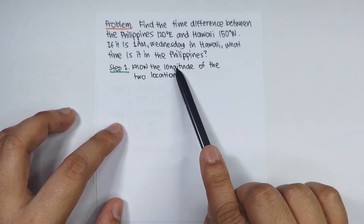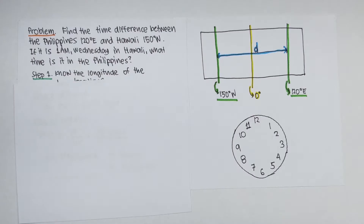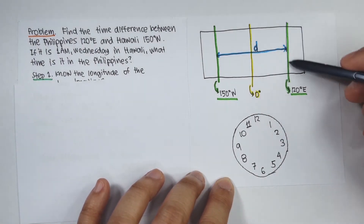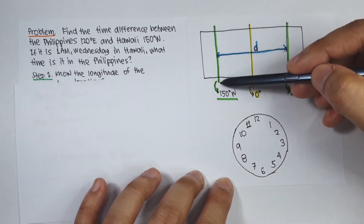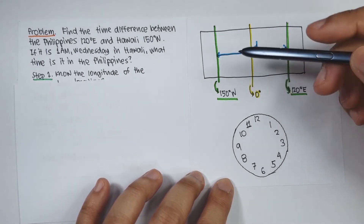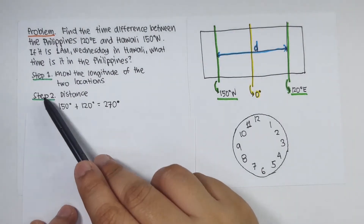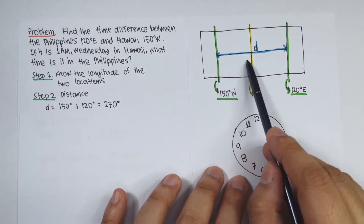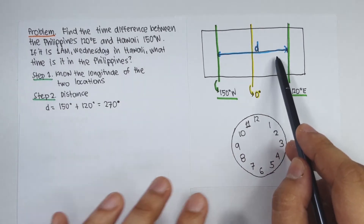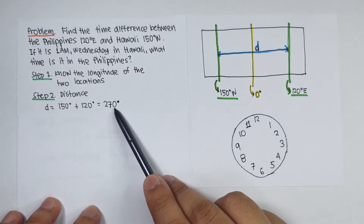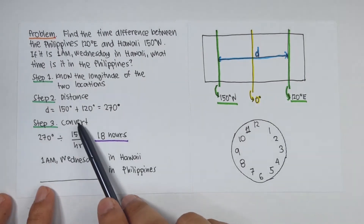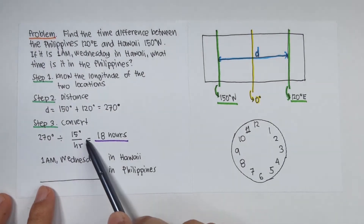Step one: know the longitudes — the Philippines at 120 degrees east and Hawaii at 150 degrees west. Step two: their distance apart is 150 plus 120 degrees, equal to 270 degrees. Step three: convert — 270 degrees divided by 15 degrees per hour equals 18 hours.